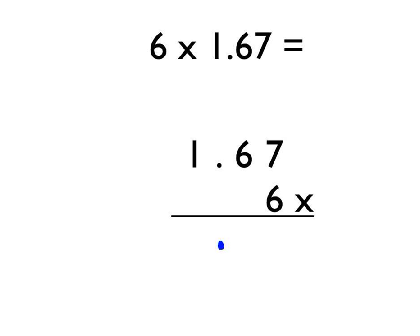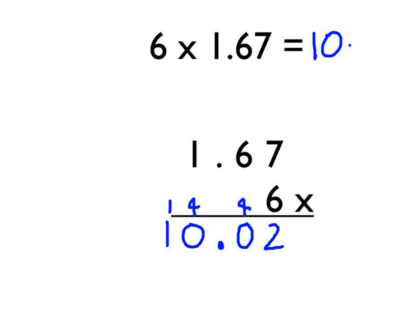Then you just start multiplying as in the previous questions, starting on the right-hand side. 6 times 7 is 42: write the 2 there and carry the 4 to the next column. 6 times 6 is 36, add the 4 we carried takes us to 40: put the 0 there and carry the 4. 6 times 1 is 6, add the 4 takes us to 10: put the 0 down and carry the 1. There's no tens digit in the top number, so 6 times 0 is 0, but we add on the 1 we carried, making that column 1. Our answer is 10.02.